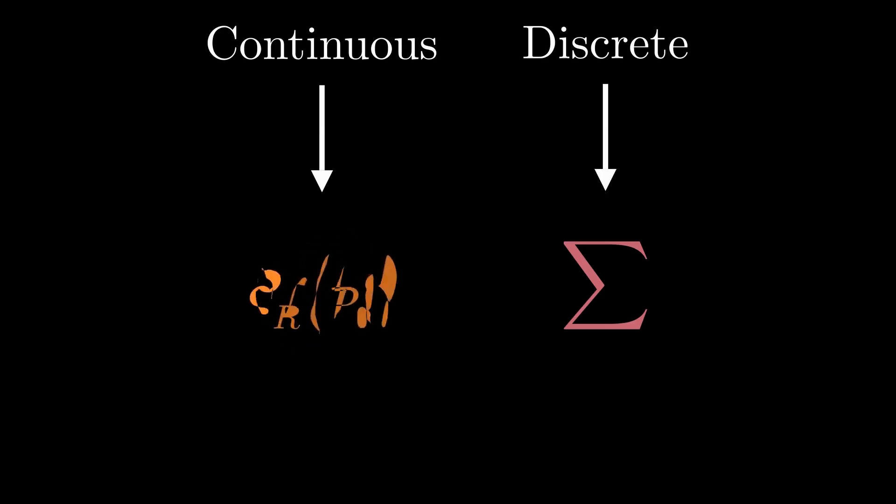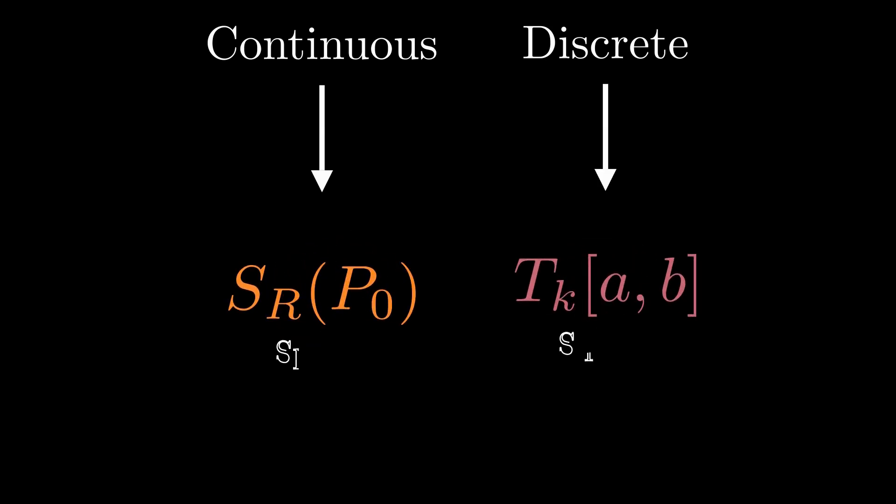A sphere centered at point p naught with radius r becomes a square with top left corner at a, b, and side length k.